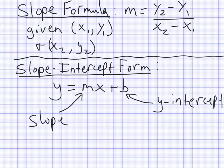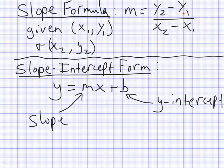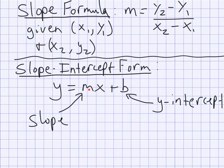Next we need to talk about the slope formula and slope-intercept form. The slope formula is m equals y2 minus y1 over x2 minus x1, where m stands for slope. Given two points on a line, you plug them into this formula and get the slope. The slope-intercept form is y equals mx plus b — this is an equation of a line. The number next to x, which is m, is your slope, and the number by itself, b, is the y-intercept. That's why it's called slope-intercept form.